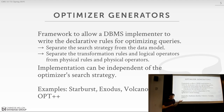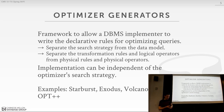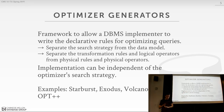Not all commercial systems use an optimizer generator. In our Cascades implementation, we don't rely on one — we just bake the rules and transformations directly in C++. Starburst is used in IBM so I know they're doing it that way, but I don't know about Oracle or SQL Server.